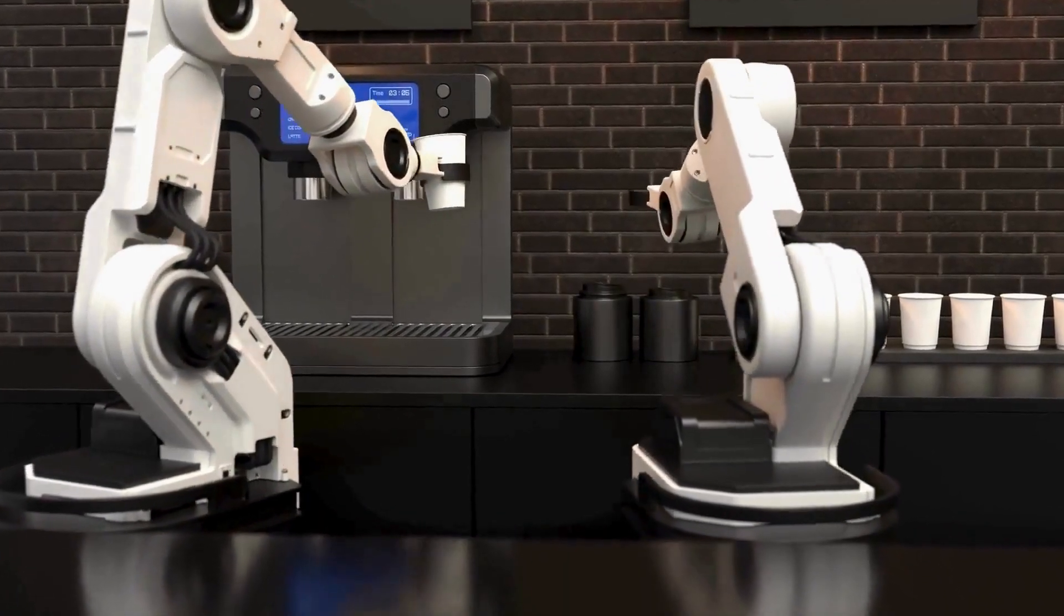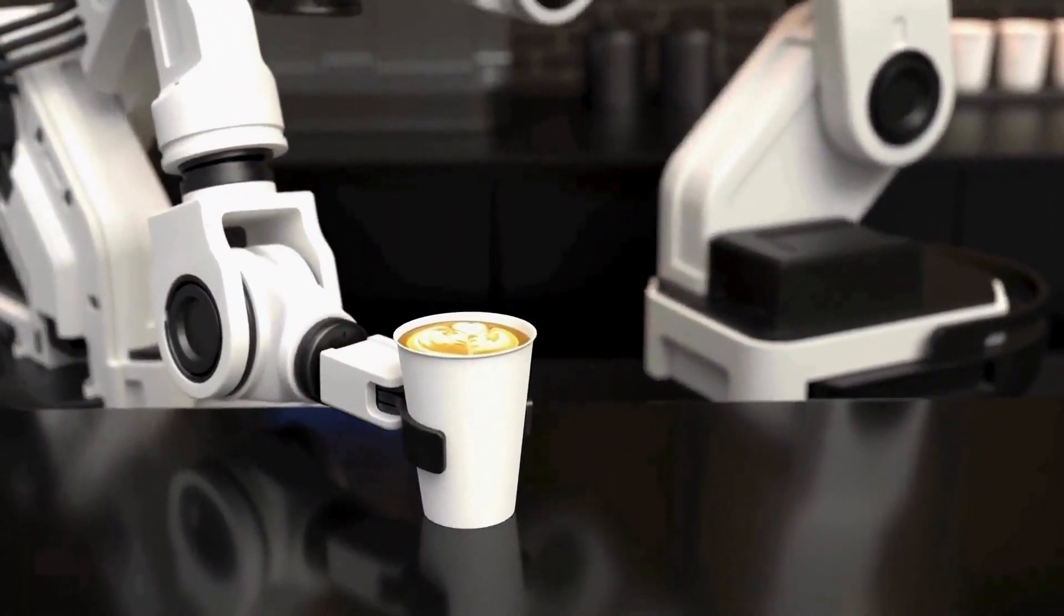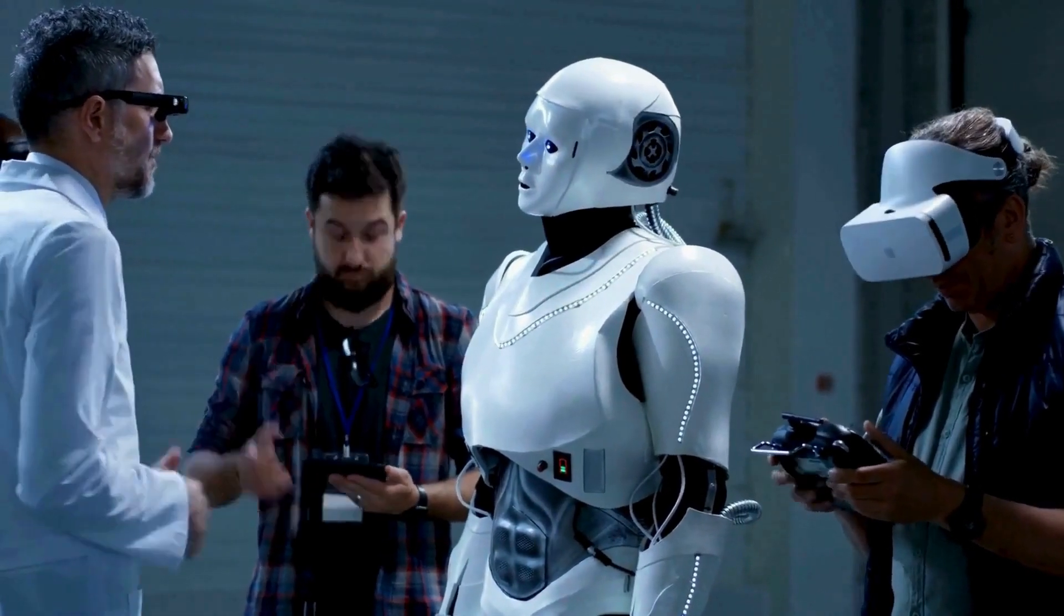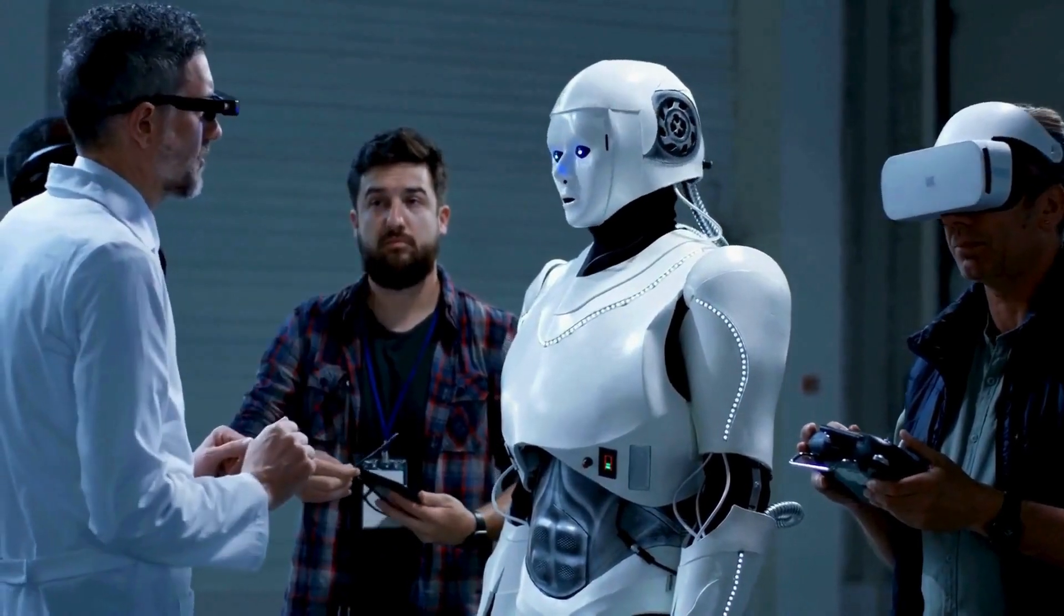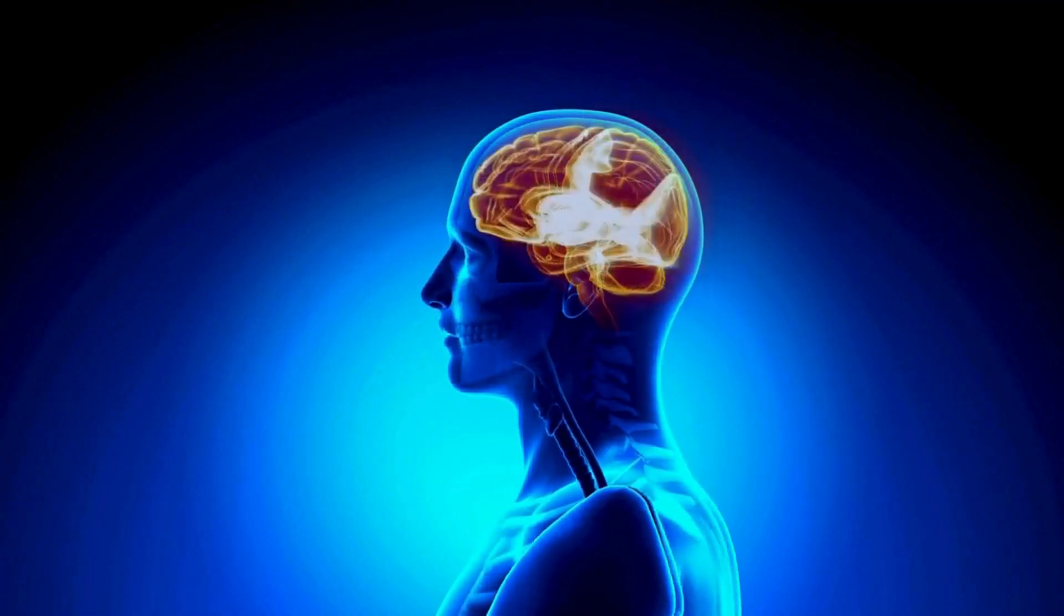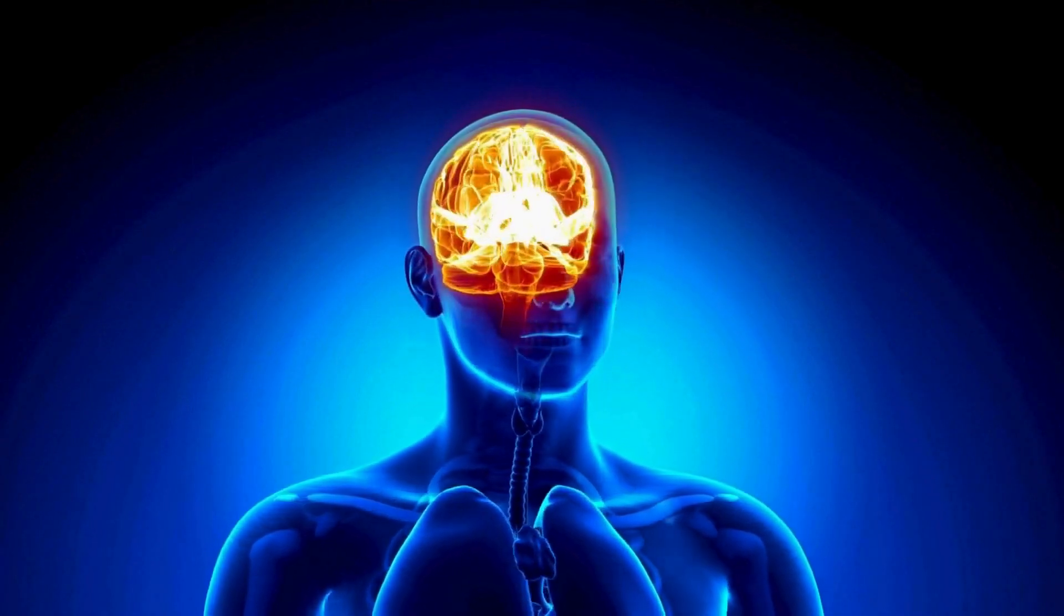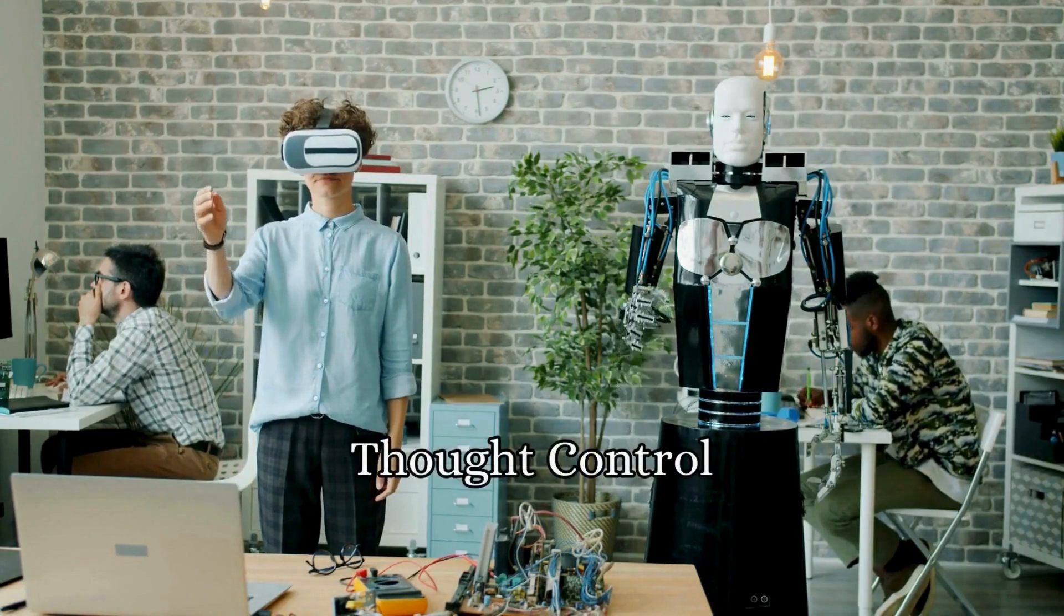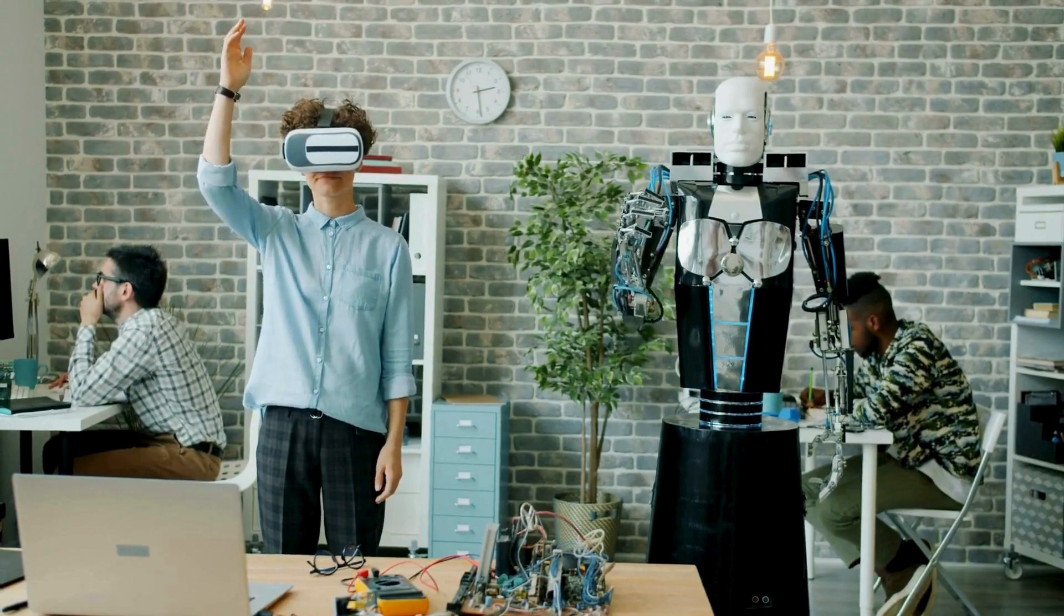But let's not forget the bigger picture here. Neuralink's ambitions go far beyond controlling devices with thoughts. Elon Musk envisions a future where human brains are meshed with artificial intelligence. This is a complex challenge that requires much more research and development. Nevertheless, the first human trial was a significant milestone. It showed that Neuralink's device can work in a human brain and that it can detect the signals necessary for thought-controlled devices, but it also highlighted the challenges that lie ahead.